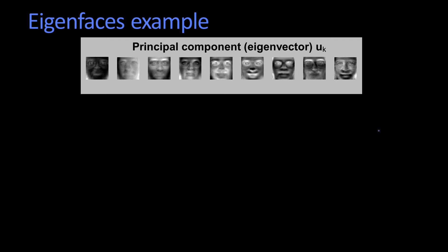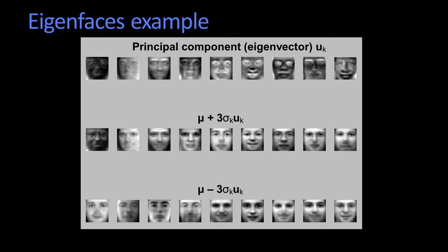It's a little bit easier to understand what these eigenvectors do if we look at it this way. Here are the principal component eigenvectors, one through whatever. Here are two different reconstructions. If I take the average face and I add in some of that component, I get this kind of thing. And if I subtract off that kind of component, I get that thing. Notice that that just moved the lighting from the left to the right.